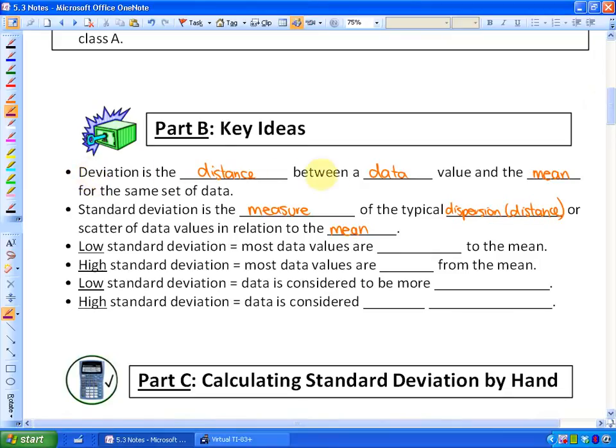Deviation is the distance between a data value and the mean for that same set of data. So if something's quite deviated, it's far from the mean. Standard deviation is the measure of the typical distance or dispersion or scatter of data values in relation to the mean. A low standard deviation means that most data values are close to the mean. If you've got a low standard deviation, everything's pretty close to the mean.